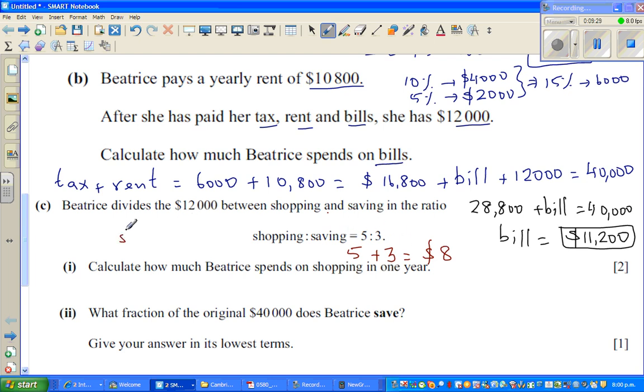In other words, on shopping, she is spending 5/8 of $12,000. Does it make sense? And on saving she is spending 3/8. Calculate how much she spends on shopping in one year. So basically, we have got the answer, which is 5/8 of $12,000.